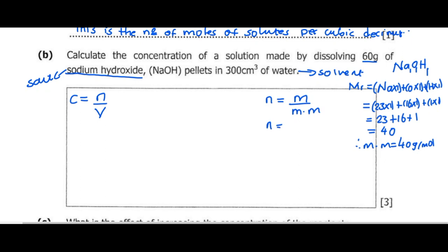Now the number of moles equals mass which is 60 grams over 40 grams per mole. The grams cancel, and 60 divided by 40 gives us 1.5 moles.